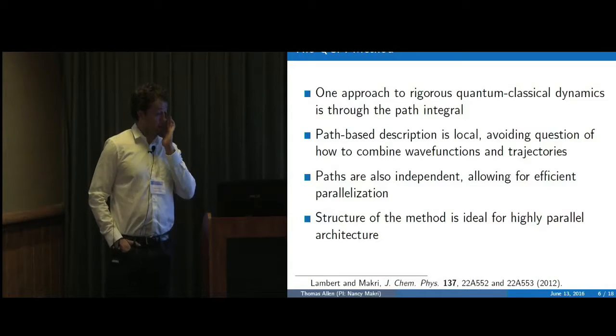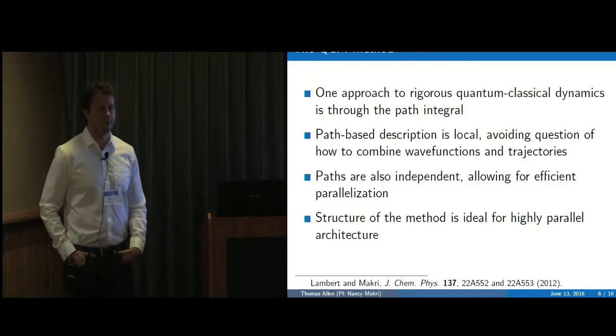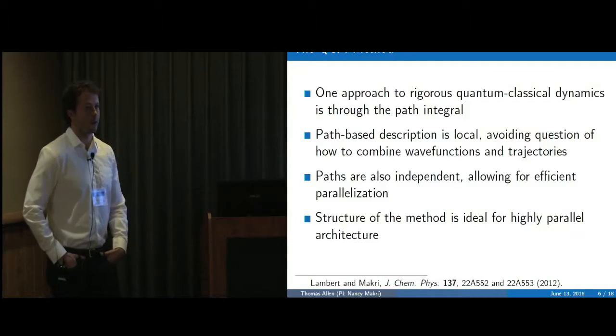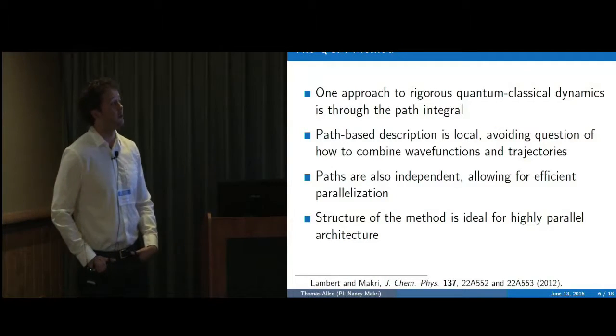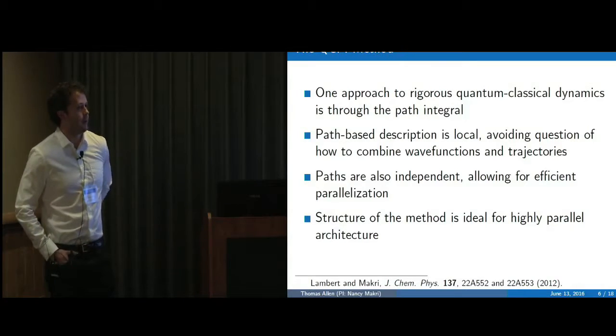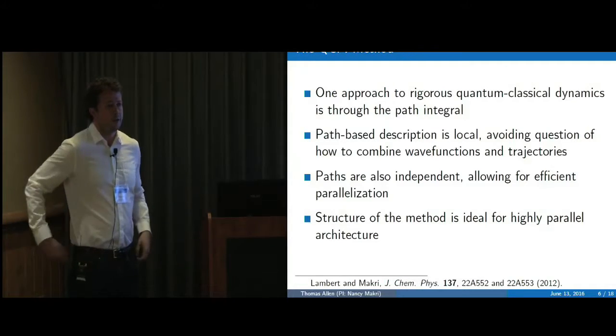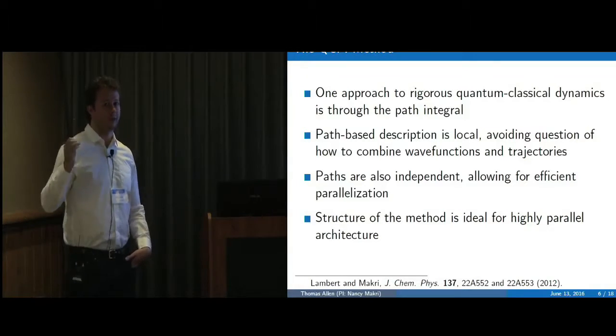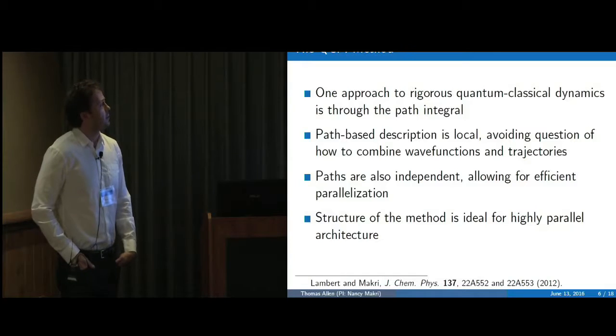And so the way that we do that is something called the quantum classical path integral. So this has been recently developed, it is a rigorous approach. We don't make ad hoc approximations, we know what the limits are and everything, and we know how to get back to a more accurate description if we want to do that, if we need to do that. The other nice thing about it is that the path-based description, so in the path integral picture, all we deal with is classical trajectories, we just have more of them than classical mechanics does. We sum over all possible paths instead of just one that classical mechanics uses.